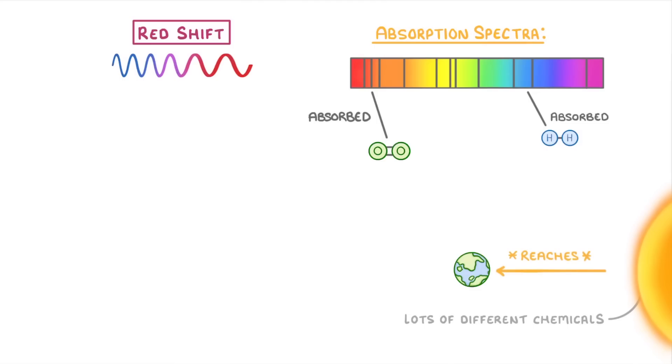This means that when the light reaches Earth, certain wavelengths are missing, and the absorption spectra for visible light ends up with a pattern of dark lines like we can see on our spectrum.